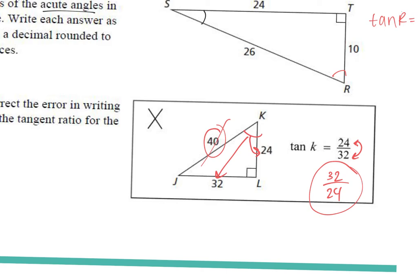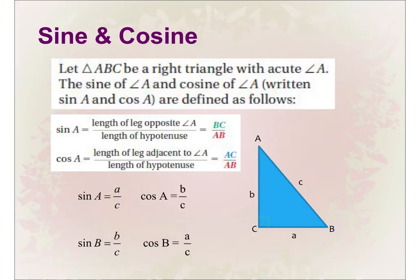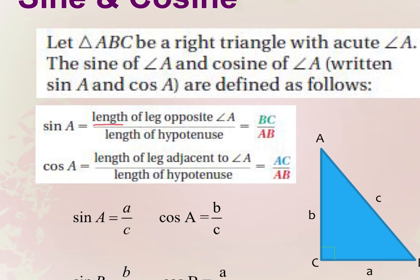Any questions on the warm-up? Today we learned about tangent yesterday. There are two more trig ratios we're going to need to know: sine and cosine. The sine ratio is the length of the leg opposite over the length of the hypotenuse. So sine now uses the hypotenuse — it's the opposite side over the hypotenuse.